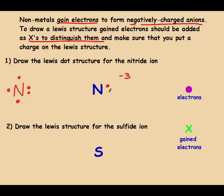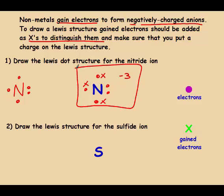Starting with five electrons, nitrogen gains one, two, three more. Notice the negative ion now has a full outer shell of eight valence electrons.